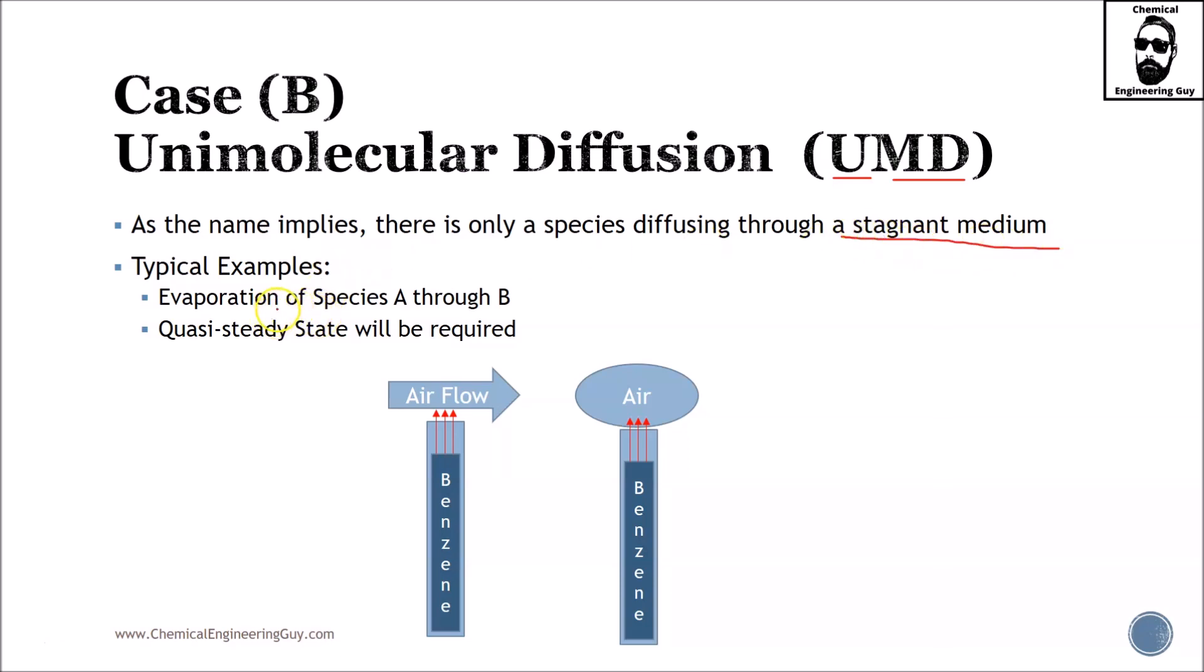A typical example will be evaporation of species A through B, which is stagnant, meaning that it is not interacting. I like to show the example of a spill. Let's say that we have gasoline, which you know is mostly n-octane, and it will evaporate if we let it outside. This is the air, the atmosphere. Mass transfer is going to occur because we have high concentration of gasoline and low concentration of gasoline. This is a typical mass transfer case. But in this specific case, air is not diffusing through the pond or this spill. So that's an important fact here.